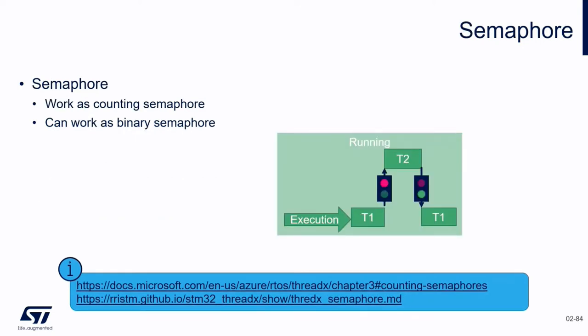Semaphores — you have probably seen them before. They are used to control access to common resources, and are also used for thread synchronization and mutual exclusion. A task like T1 could have to wait for a semaphore from T2 before going on with execution. We can imagine a situation where we return from an interrupt subroutine and give a semaphore to indicate that data is ready.